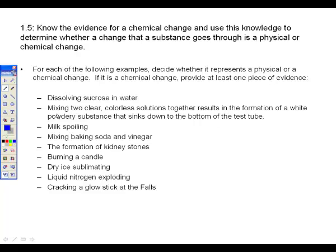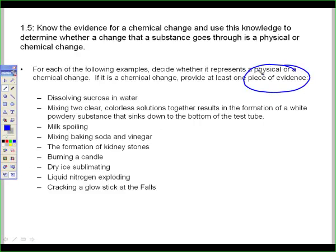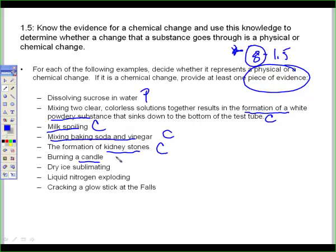Moving on. Physical and chemical change. You, based on our discussions today, need to look at your pieces of evidence. There are eight in your notes for 1.5. Check them out. Dissolving sucrose in water is physical. Two clear color solutions, formation of a white powdery substance, that's called a precipitate. That's one of your eight pieces of evidence. So that's chemical. Milk spoiling, you've got an odor change, that's chemical. Mixing baking soda and vinegar, you've got gas release, you've got heat absorbed, you've got a change in odor, chemical. Formation of kidney stones is a precipitate, that's chemical. Burning a candle, heat released, light released, chemical. Dry ice sublimating, that's going from a solid to a gas, that's just a phase change, that's physical. Liquid nitrogen exploding, it exploded because it went from a liquid to a gas, it vaporized, that's just a physical, even though it exploded. And cracking a glow stick, you've got light released and a color change, so that's chemical.